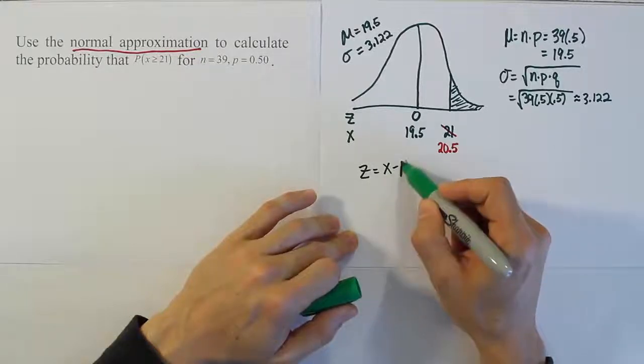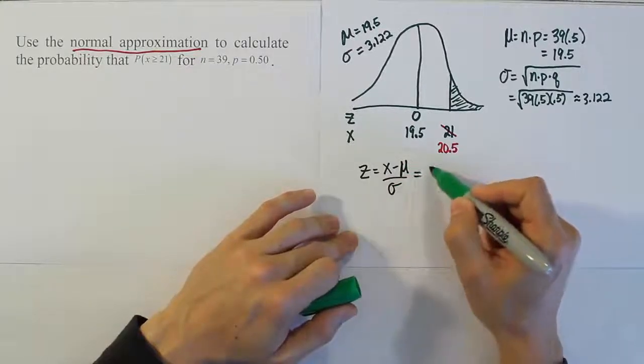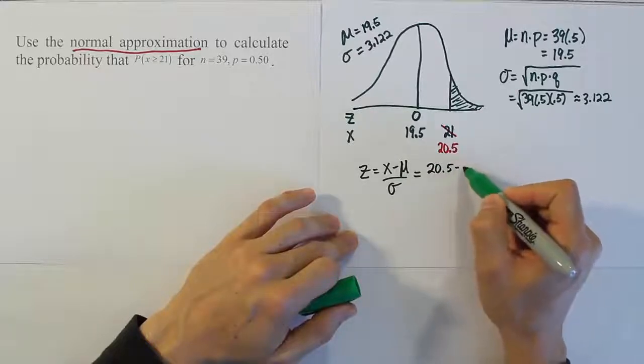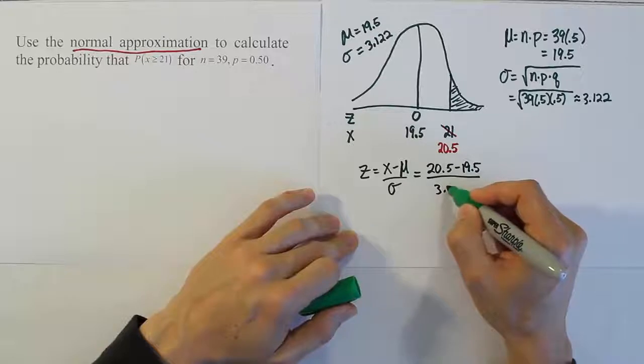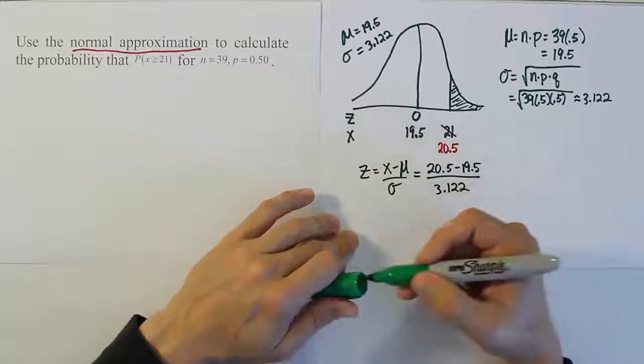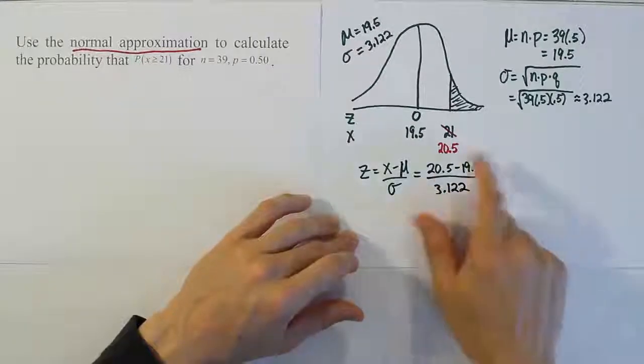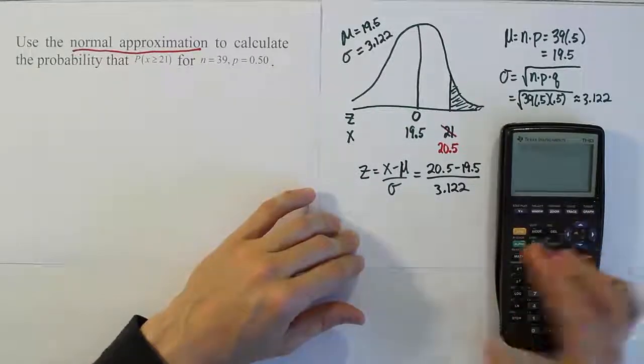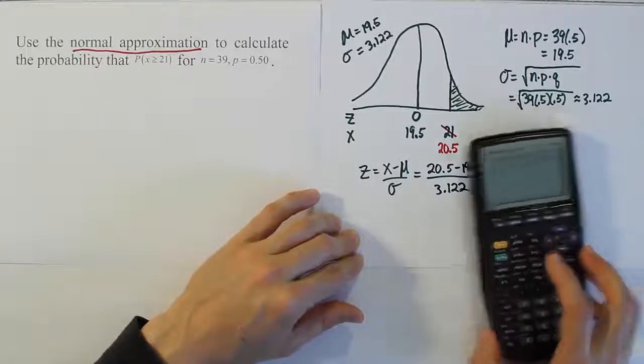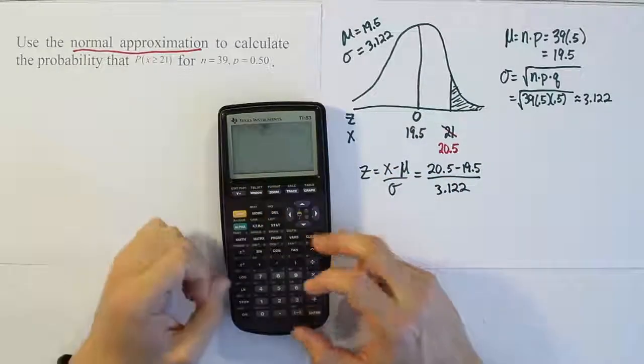So let's convert our 20.5 into a z-score. The formula is x minus the mean over sigma. So we'll plug in 20.5 minus 19.5 divided by 3.122. From 20.5 to 19.5, it's a distance of 1. So we're going to end up having 1 divided by 3.122. Let's work that out in our calculator to see what we get.